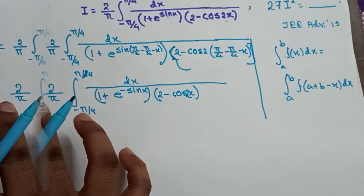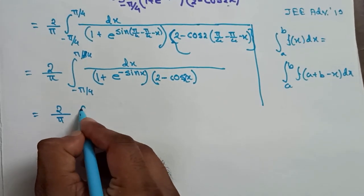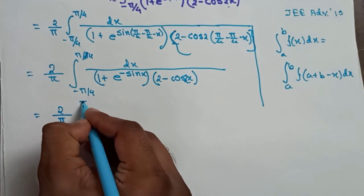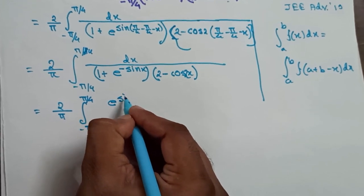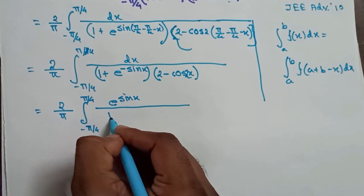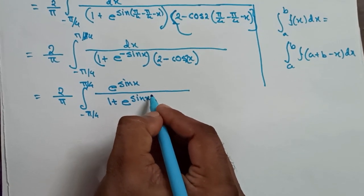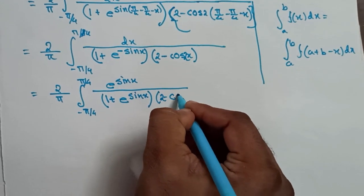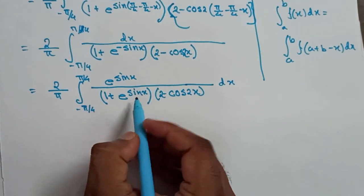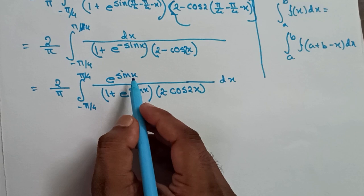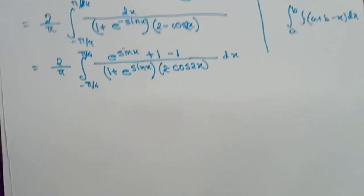1 + e^(-sin x) and 2 - cos 2x, since this one is even, so it is nothing but cos 2x. Let's see what's happening here. For this portion it will become e^(sin x), and here it will remain as 1 + e^(sin x), 2 - cos 2x. Very important thing: it is e^(sin x) and it is e^(sin x). Now I am taking +1 and -1 and see what happens here.